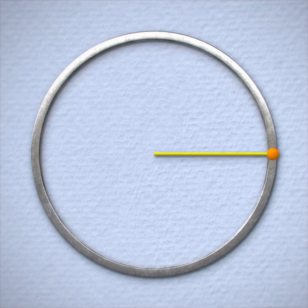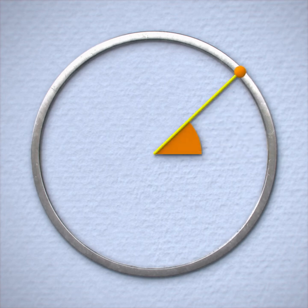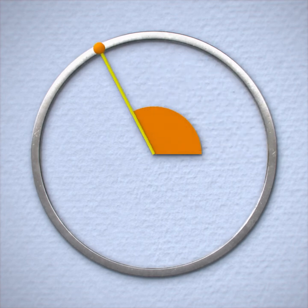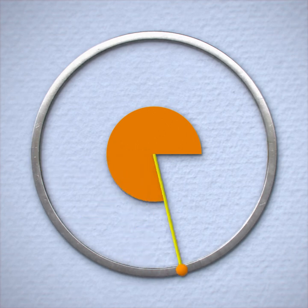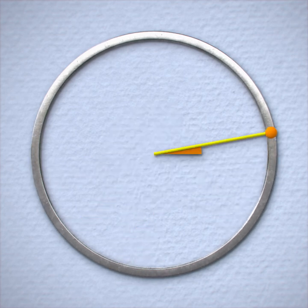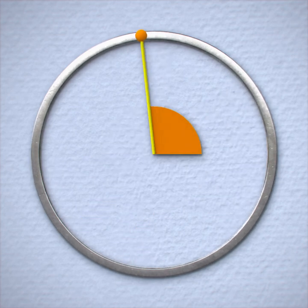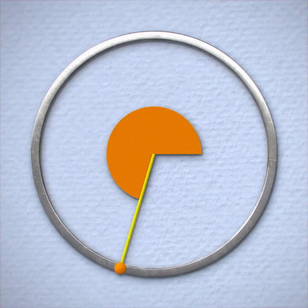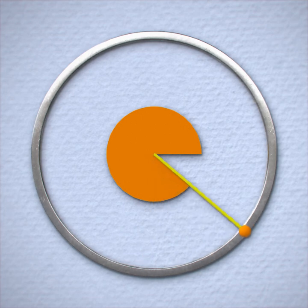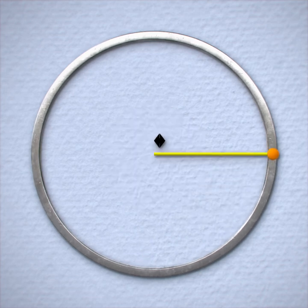Let's look at a point on a circle and track its position as we rotate the circle around. As the angle of the circle changes, the point moves up and down and back and forth. But its distance from the center of the circle remains the same — it's always one circle radius away from the center.